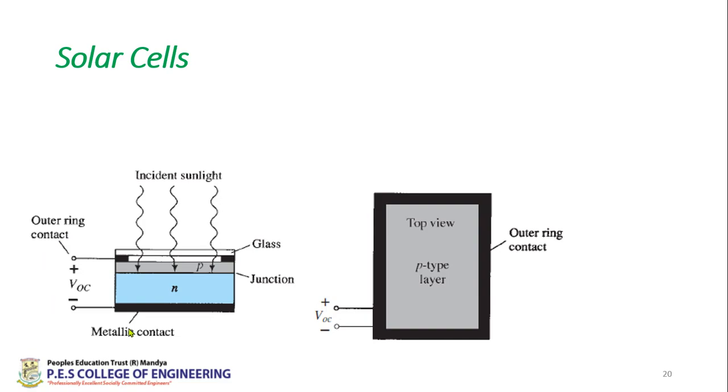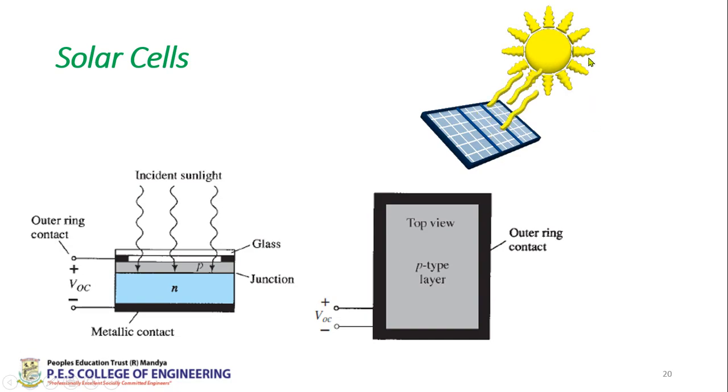This is a top view of the solar cell and its functionality. Whenever there is incident light, there is not recombination but actually emission of electrons. The valence electron gets excited by the incident photon and escapes out of the valence orbit. This is the general structure of a solar cell.